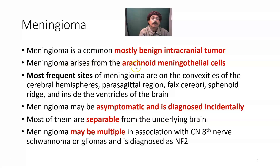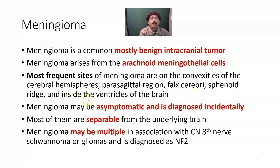Meningioma arises from the arachnoid meningothelial cells. The most frequent sites of meningioma are on the convexities of the cerebral hemisphere, parasagittal region, falx cerebelli — that is a fold of dura mater in between the two cerebral hemispheres — sphenoid wings, and inside the ventricle of the brain over the arachnoid stroma over the choroid plexus.